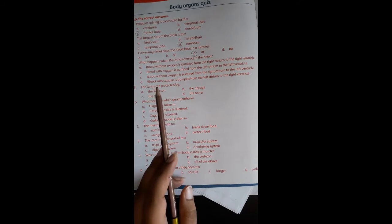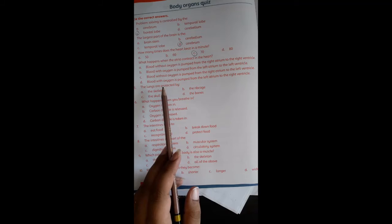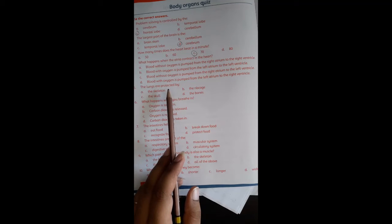Blood without oxygen is pumped from the right ventricle. Blood with oxygen is pumped from the left ventricle.